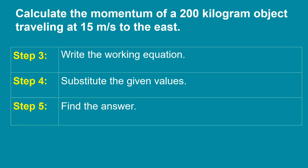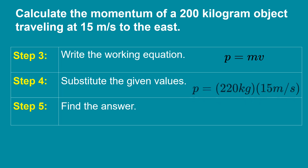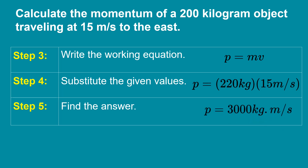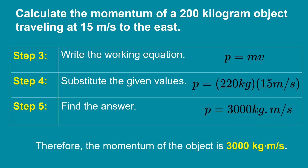Step 3: Write the working equation, which is momentum is equal to mass times velocity. Let's substitute the given values. Momentum is equal to 200 kilograms times 15 meters per second. And the final answer is momentum is equal to 3,000 kilogram meters per second.